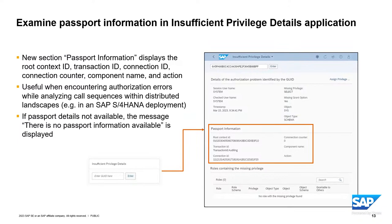In the insufficient privilege details application — the application you use to see what authorizations or errors you may face — there's a new section called passport information that displays things like the root context ID, transaction ID, connection ID, and more. This is useful when authorization errors are triggered while analyzing a call sequence in a distributed landscape, such as an SAP S/4 HANA deployment. You just paste the GUID into the application to see all the error information, and now you can also see the passport information. If passport information is not available, a message will indicate that.